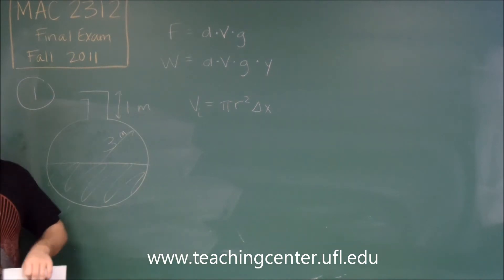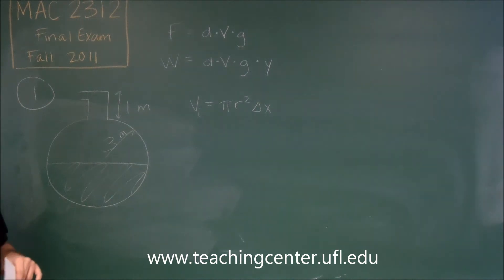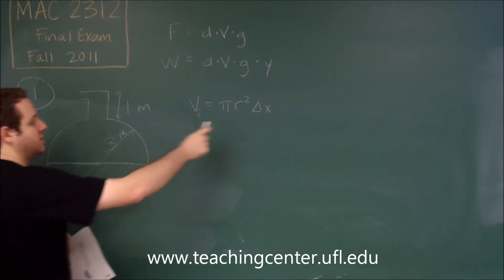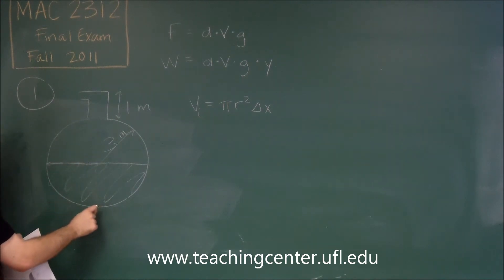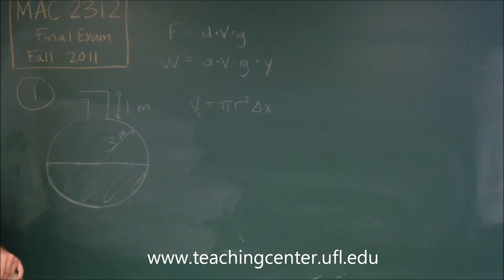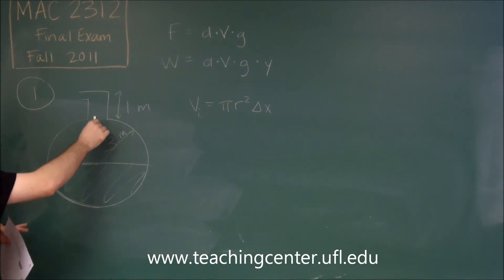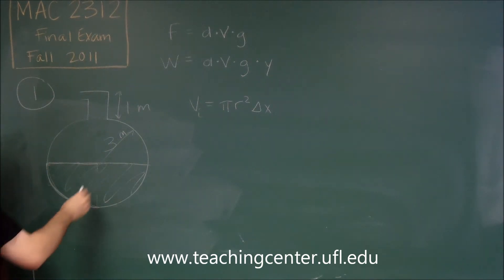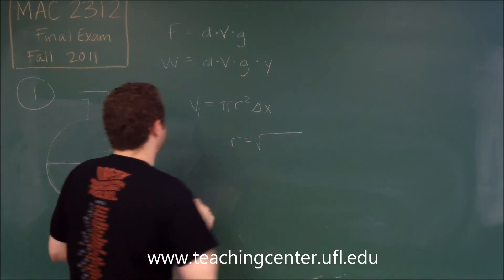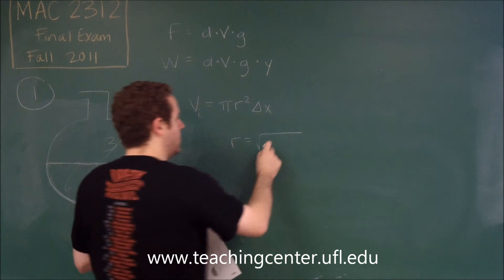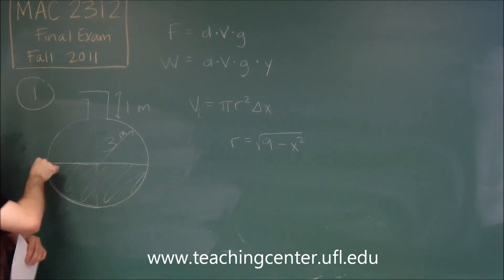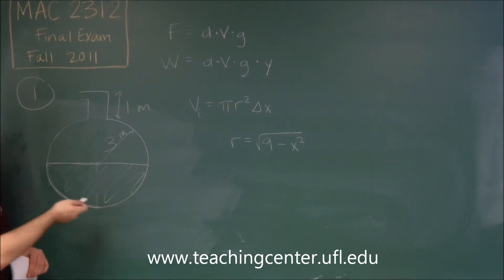We need an equation for the radius of each slice. The radius goes from the center to the edge — when X is zero (at the center) the radius is three, and as we go down to the bottom the radius gets smaller. Thinking of it as a circle, the top half has equation √(r² − x²), and with r = 3 this becomes √(9 − x²). When X = 0 the radius is three, and when X = 3 the radius is zero — exactly what we want.